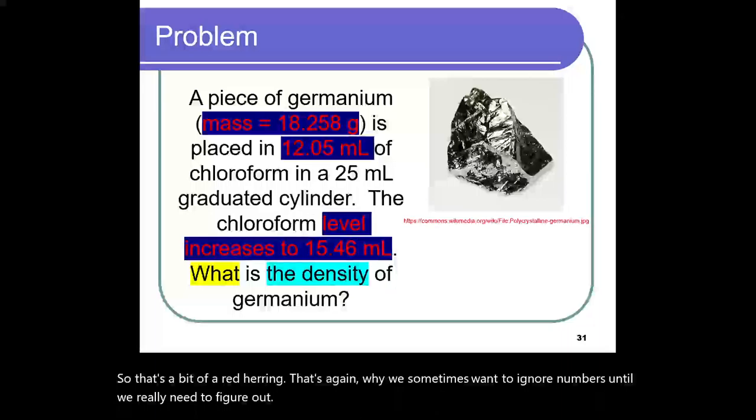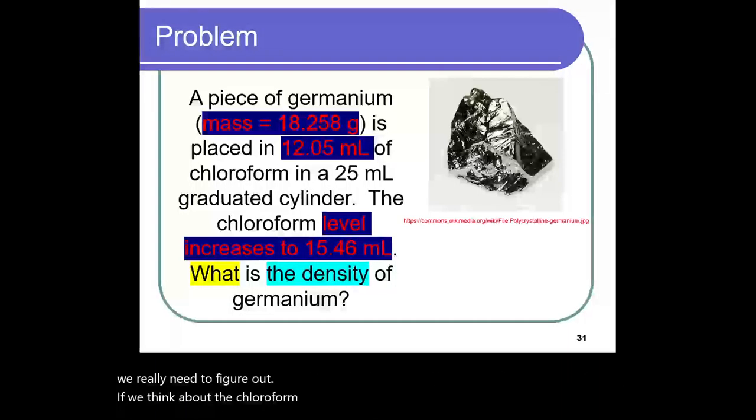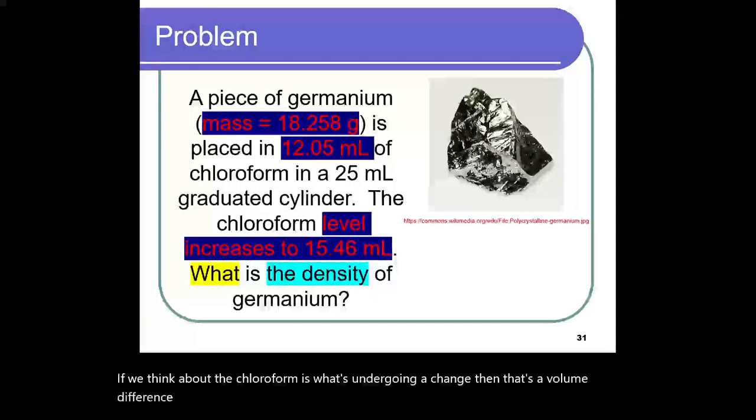If we think about the chloroform is what's undergoing a change, then that's a volume difference. That volume difference is going to be equivalent to the volume of the germanium. And now we've got the two pieces of information, mass and volume, to solve this particular problem.